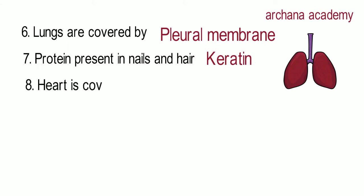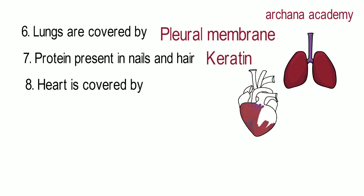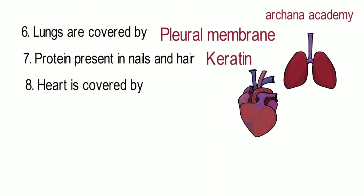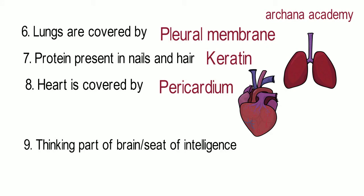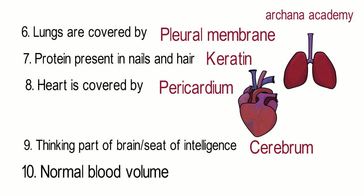The protein present in nails and hair is keratin. Keratin protein is also present in the hooves of animals. The heart is covered by a protective covering known as the pericardium. The thinking part of the brain, or seat of intelligence, is the cerebrum, which is also the largest portion of the brain.